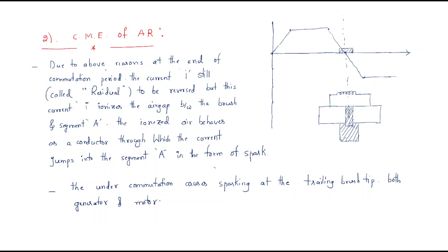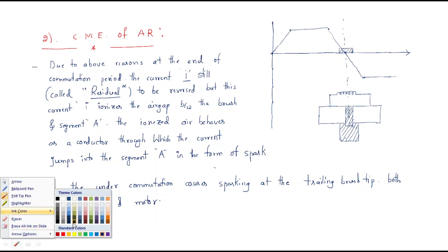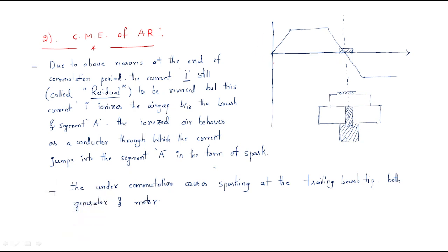Due to the above reasons, at the end of the commutation period, a current called the residual current is available. Due to the reactance voltage, the commutation proceeds such that some current value remains — although ideally the current should be zero, some current is still available. This remaining current is called the residual current.